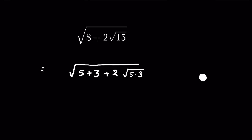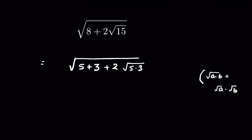If a times b is under a square root, then we can write it as square root of a times square root of b. Also, square root of a squared is equal to a, because the square root and the square cancel out.